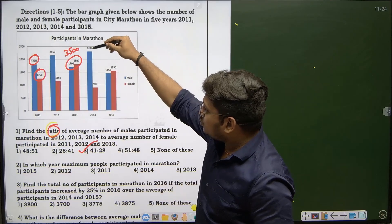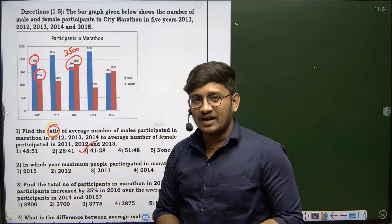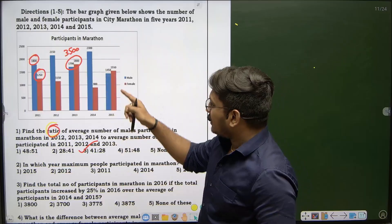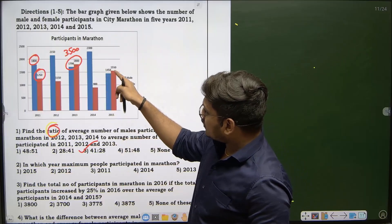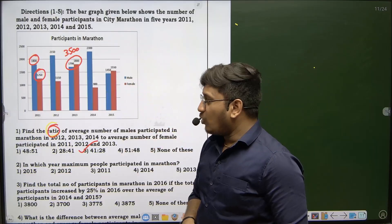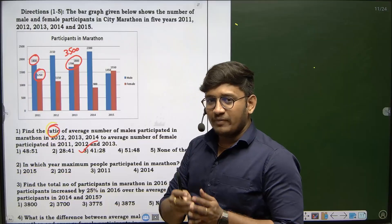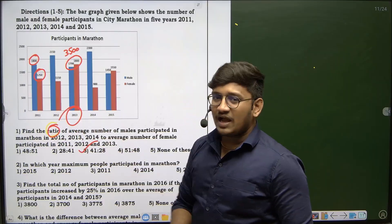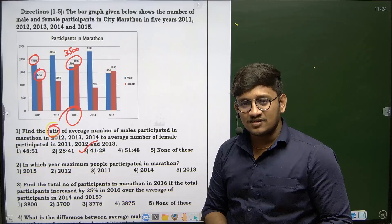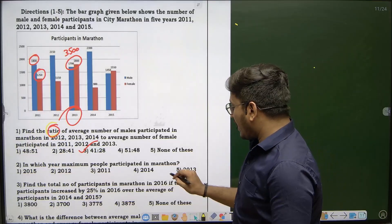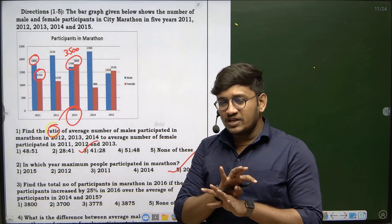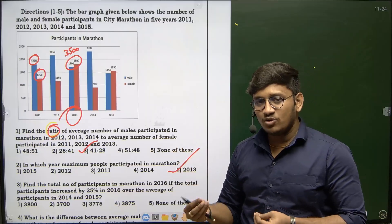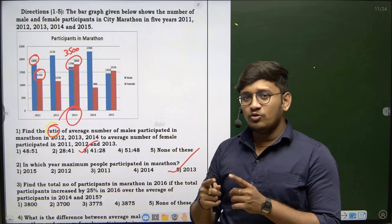For 2014: 2300 plus 900 gives 3200, which is less than 3500. For 2015 it is just 3000. Out of all values, 2013 has the highest number of total participants. So the answer is 2013.